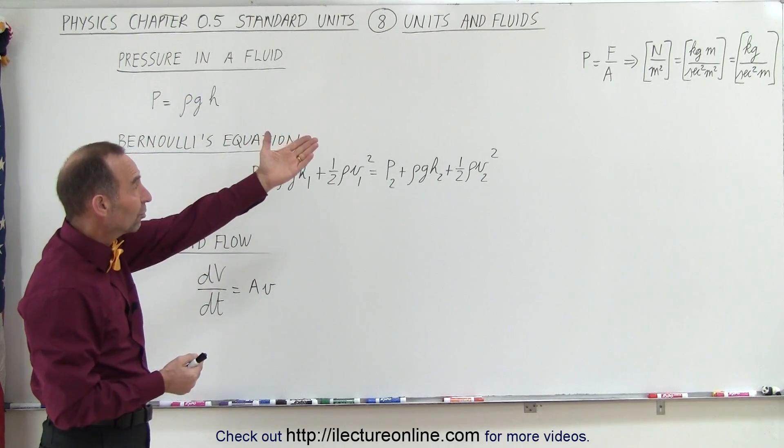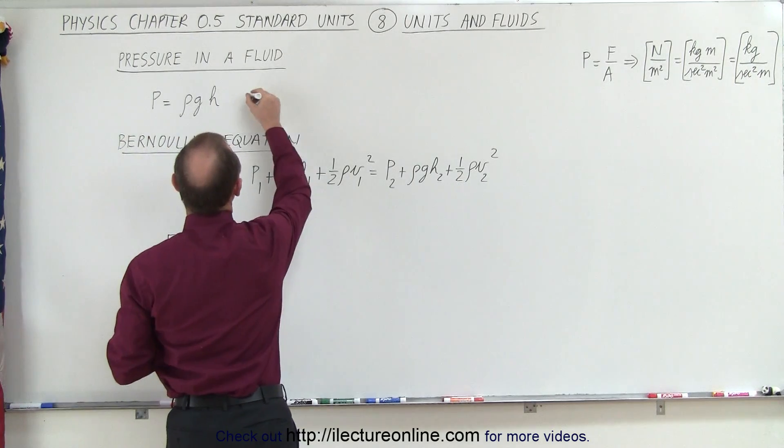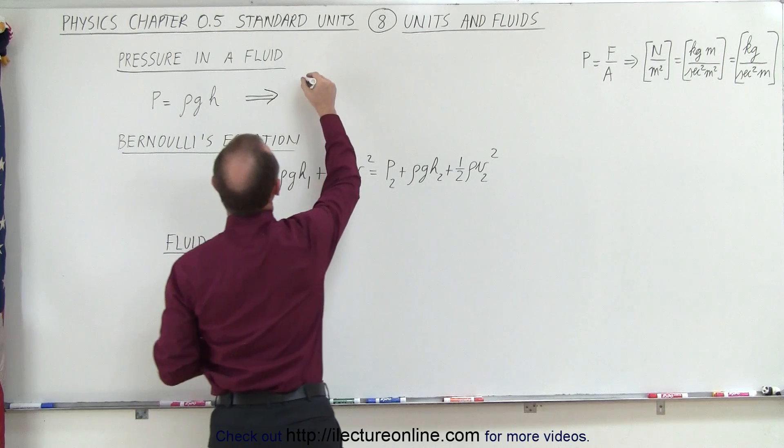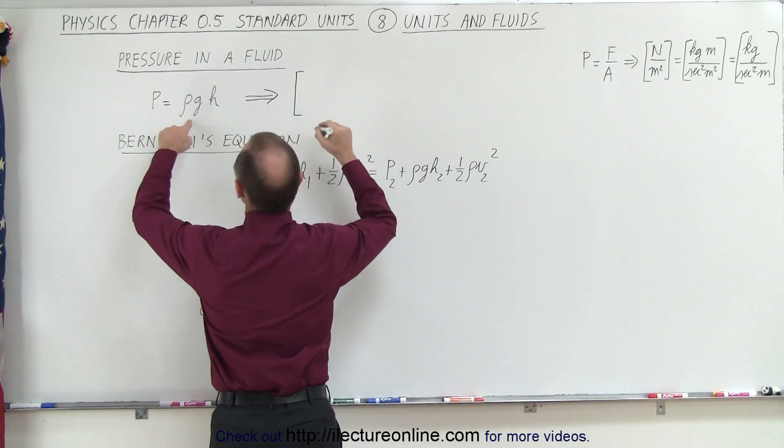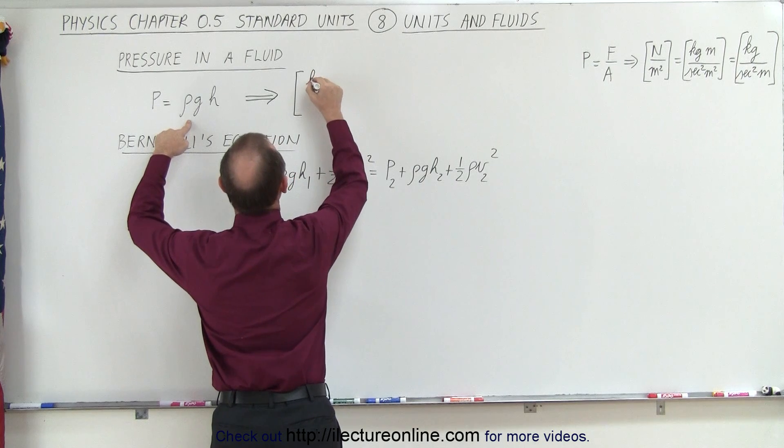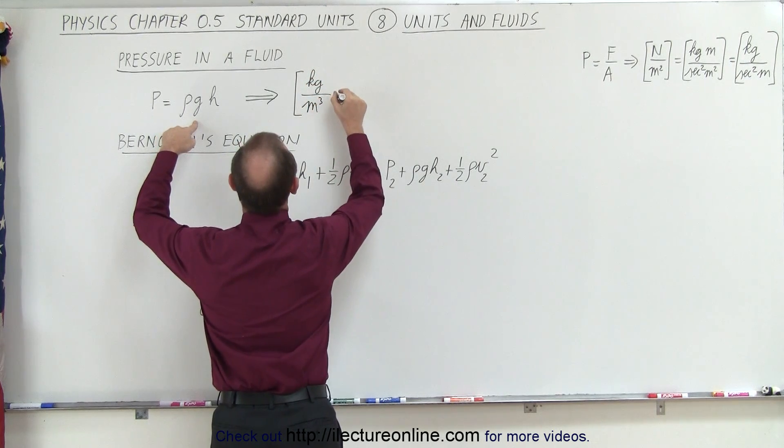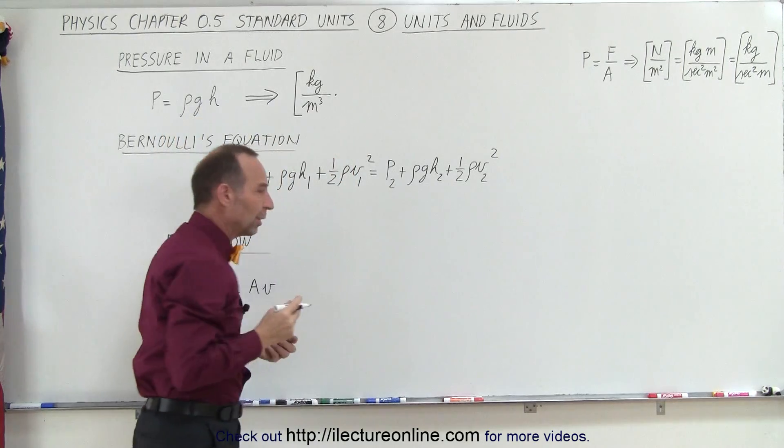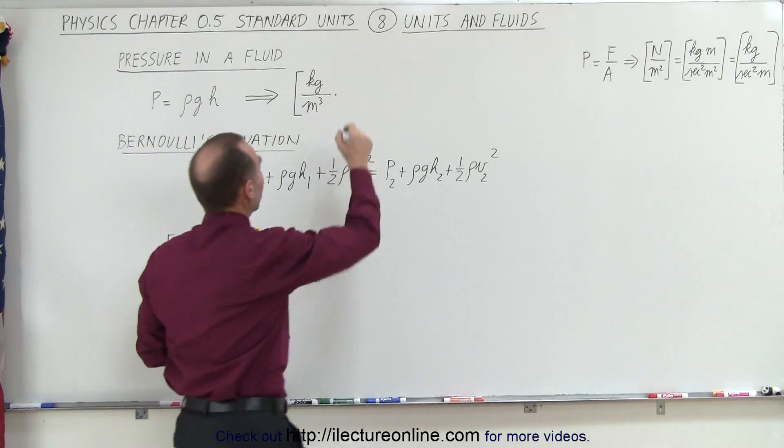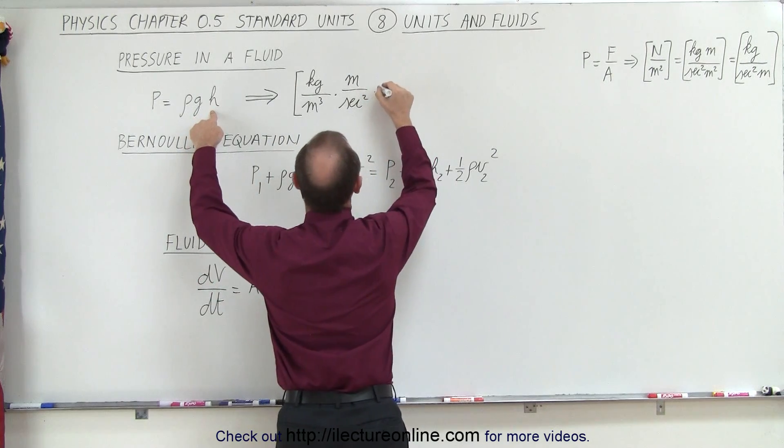Will that have the same units as pressure there? It should, so let's find out. If we look for the units, first of all, density has the units of mass per unit volume, so that's kilograms divided by meters cubed. g is acceleration with units meters per second squared. And height has linear units of meters.